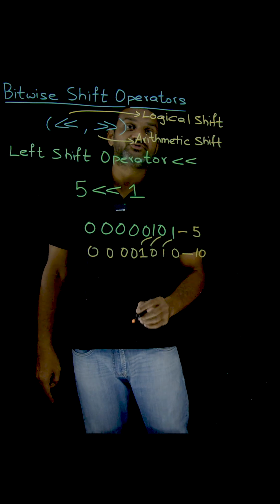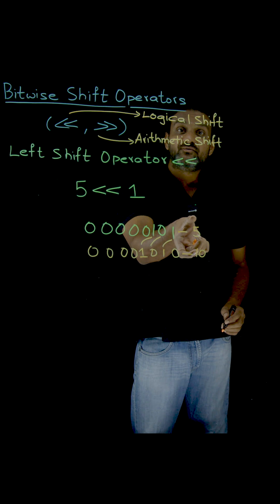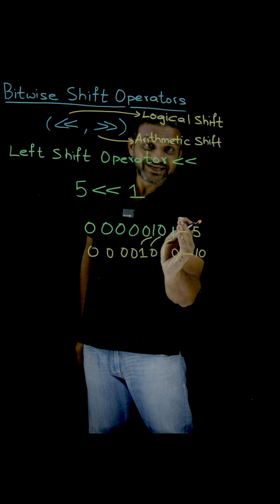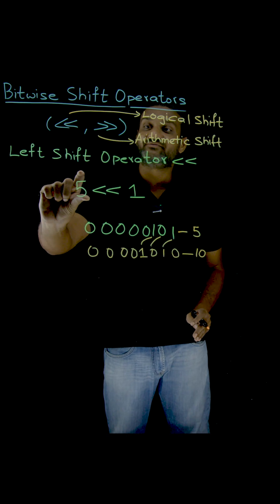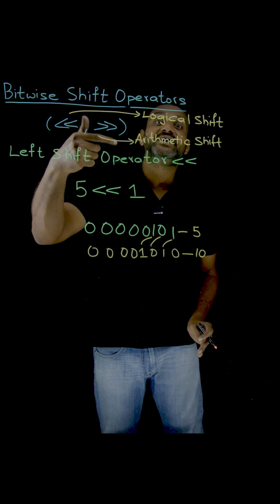What are we going to understand from this? What we are going to understand is that whenever we do one left shift operation, the given value—the actual value 5 in this case—will get multiplied by 2.